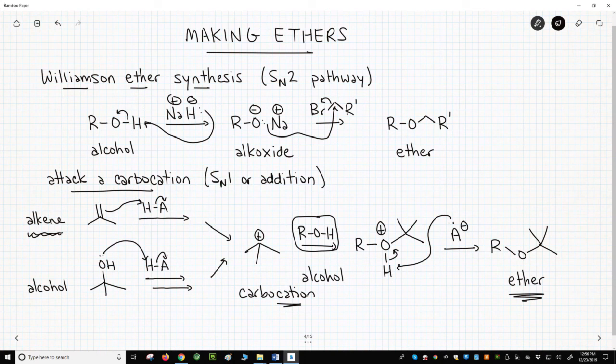Both of these general methods work well, but they do have their limitations. For the Williamson ether synthesis, we are talking about an SN2 reaction with an alkoxide. Alkoxides are basic, so the reaction is limited to primary halides. Alkoxides, because of their basicity, will perform an E2 reaction on more hindered halides.